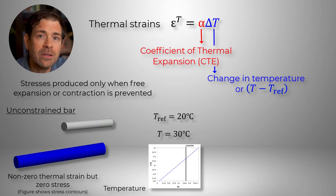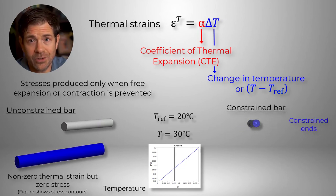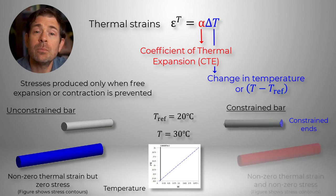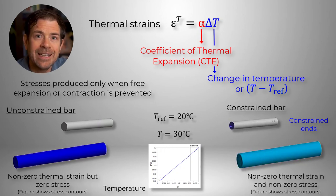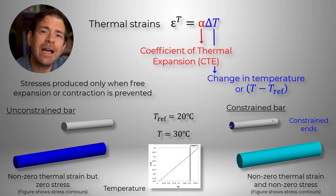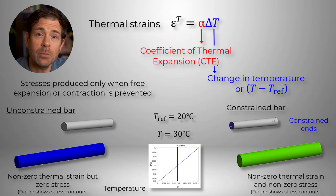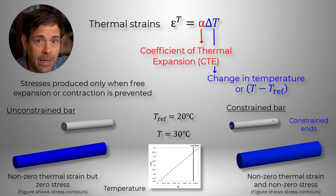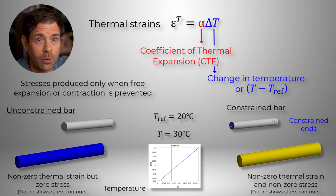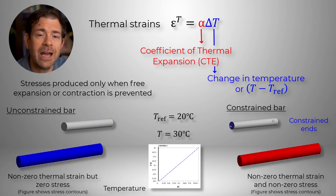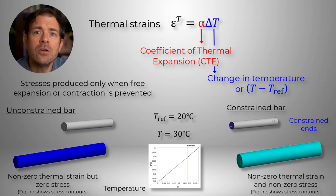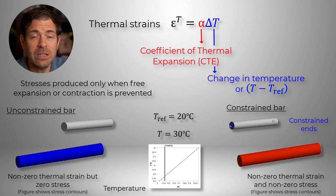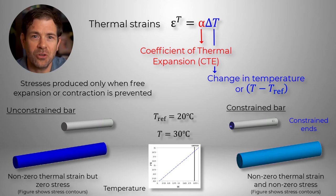Now let's fix the two ends of the bar and heat it again to a uniform temperature of 30 degrees Celsius. Since the bar is no longer allowed to expand freely, non-zero stresses are produced in the bar. This was an academic case with a simple geometry composed of a single material and having a uniform temperature throughout the body. In cases where the geometry is complex, or multiple materials with different CTEs, or the temperature distribution is not uniform, we need to use numerical simulations to calculate stresses and strains. So let's go through a simple example and learn how to import temperature results from a thermal analysis into a static structural analysis.